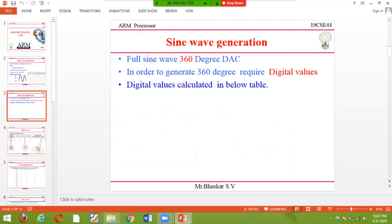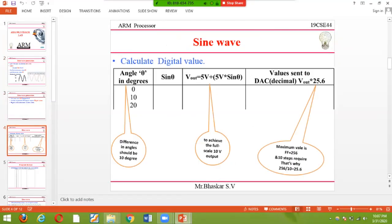In order to find these values, for a full sine wave of 360 degrees, the required digital values are calculated in a table. To find the values, you can do 0, 1, 2, 3 degrees to get 360 values, but that's difficult. Instead, I'll take only 36 values: 0, 10, 20, 30, 40 degrees, with 10-degree differences between each angle.